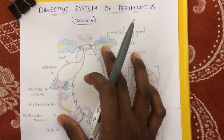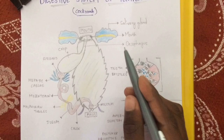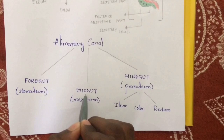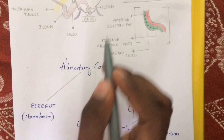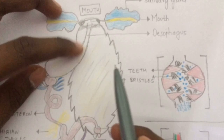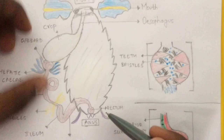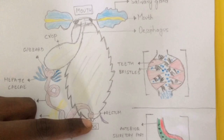The digestive system of Periplaneta americana mainly consists of the alimentary canal. The alimentary canal mainly consists of three parts: foregut, midgut, and hindgut. Foregut is commonly known as stomodeum, midgut is commonly known as mesentron, and hindgut is commonly known as proctodeum. The alimentary canal is a long tubular structure, coiled in some places, and it mainly starts from the mouth and ends in the anus.